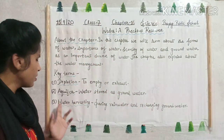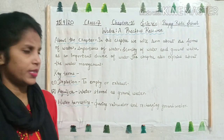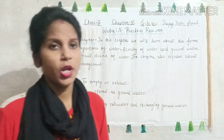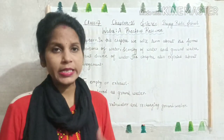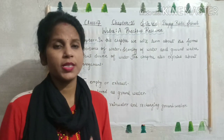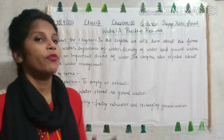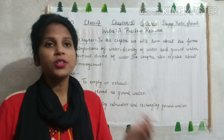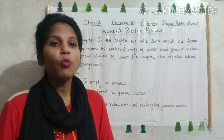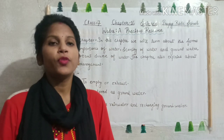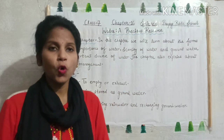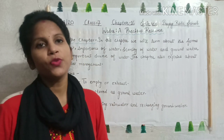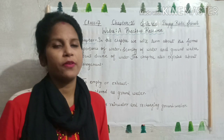Then third is water harvesting — saving rain water and recharging ground water. Water harvesting, or rain water harvesting, is the method through which we can save rain water without wasting it and we can recharge ground water. Recharge ground water means if the level of ground water is getting low, we can refill it by the use of rain water harvesting.